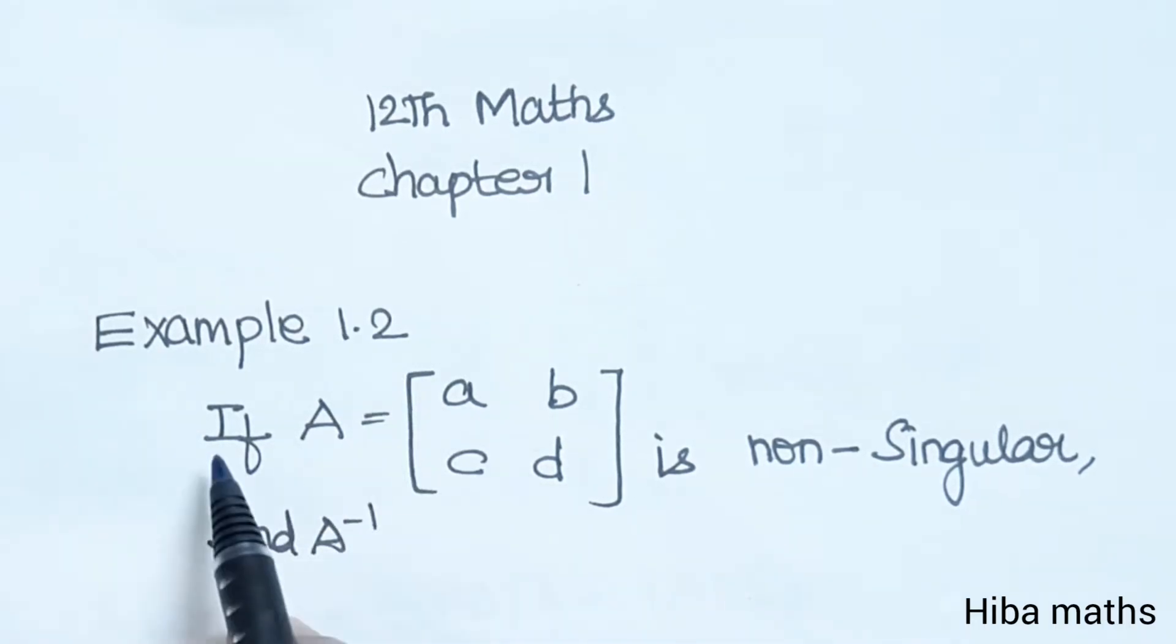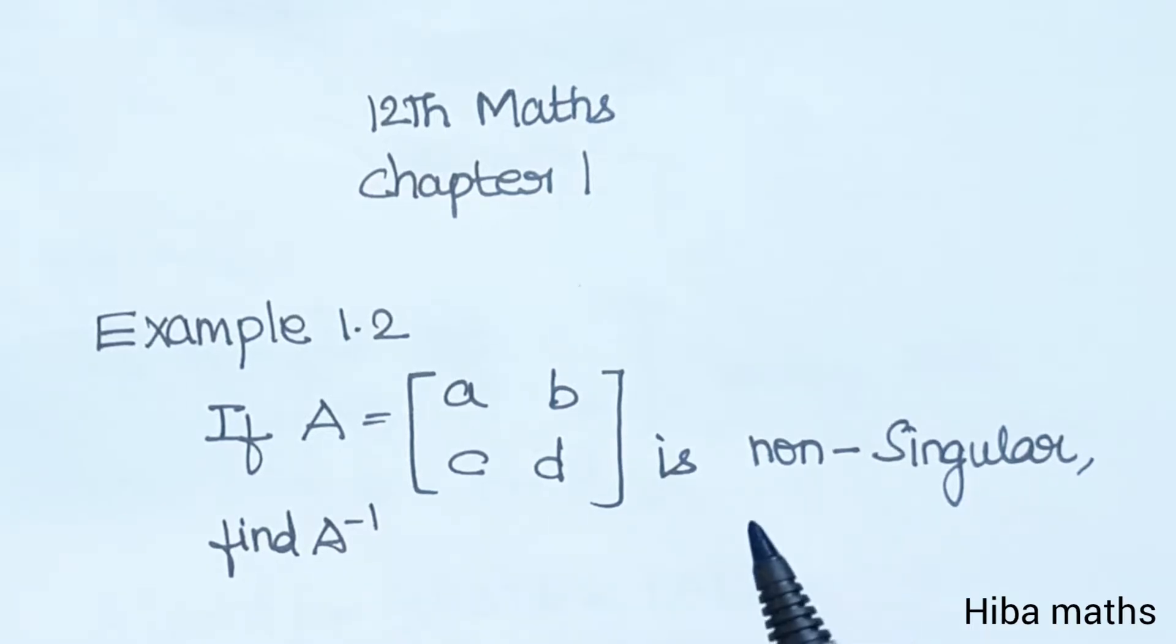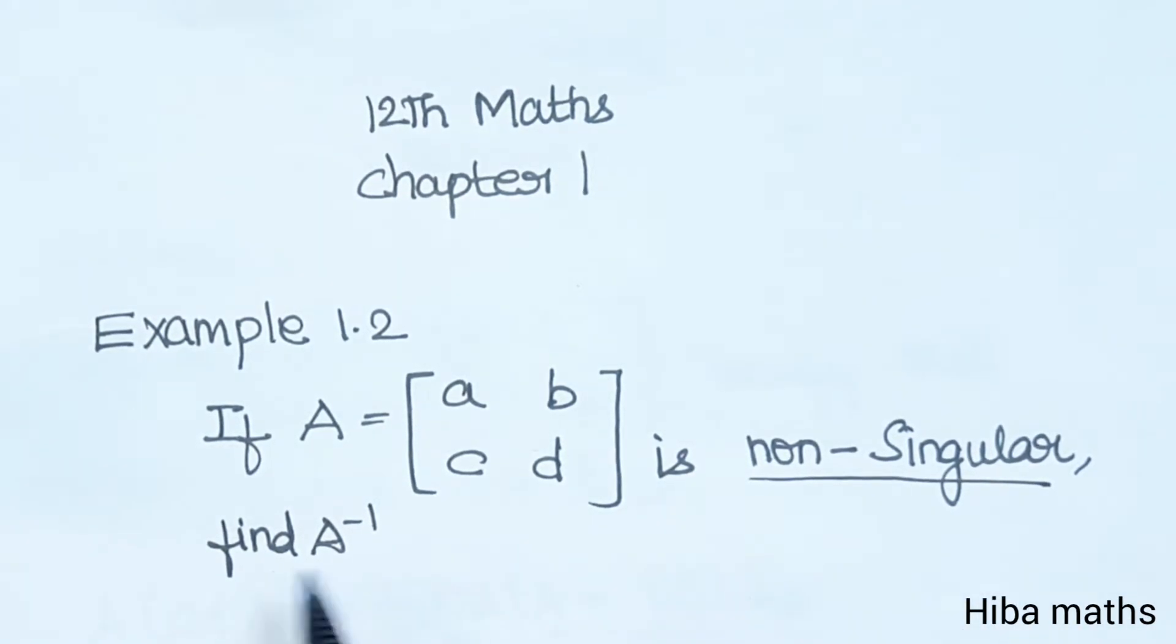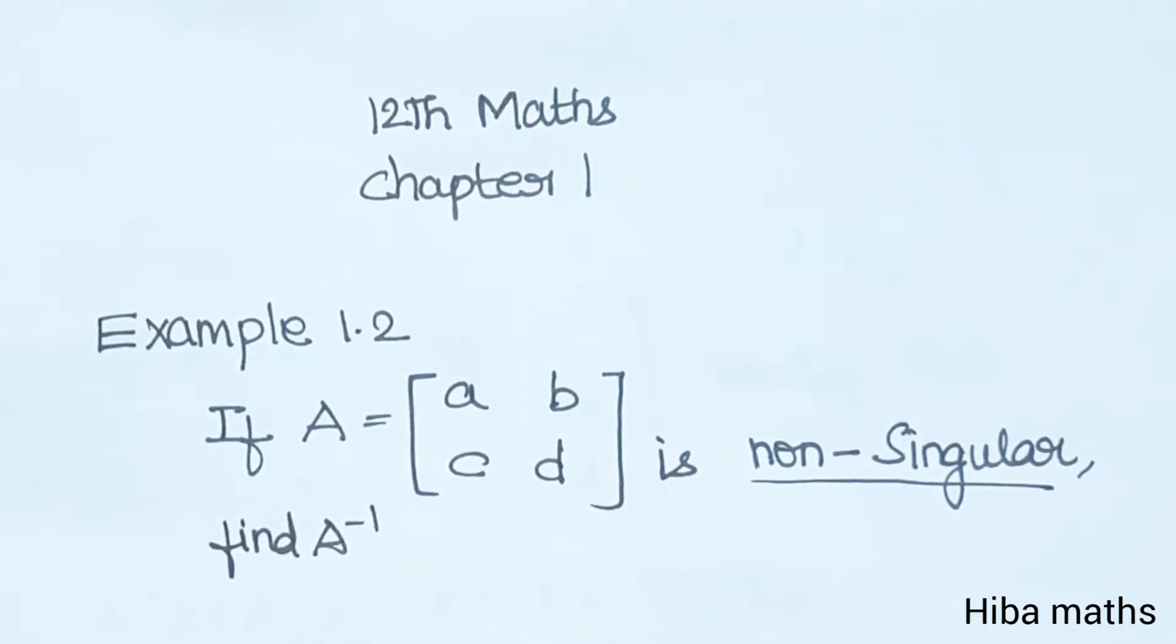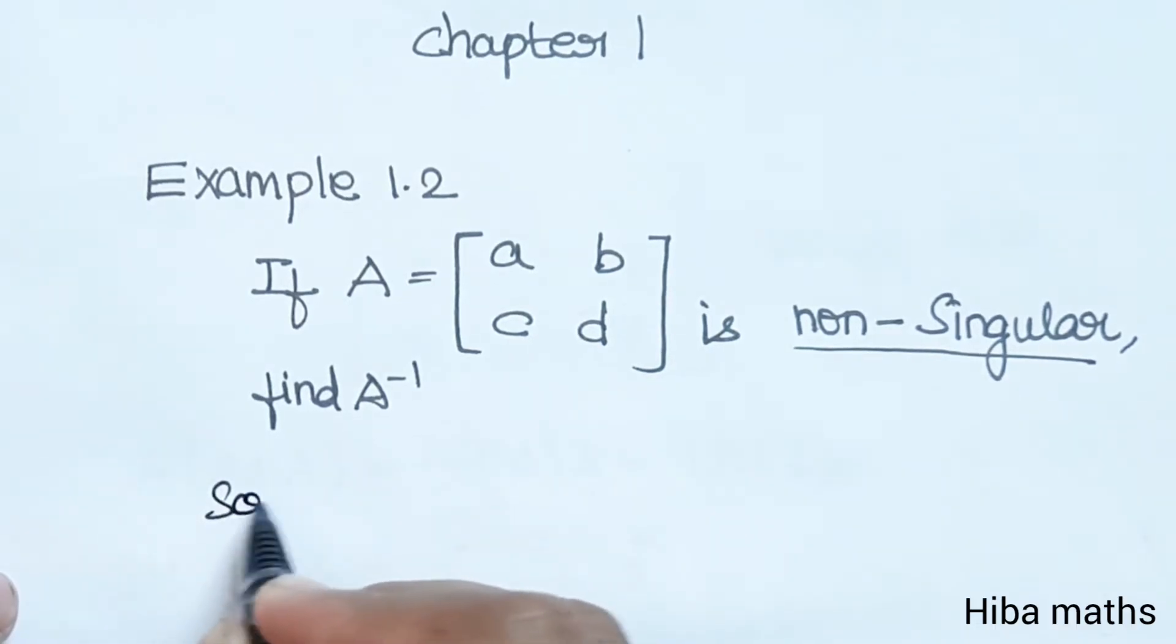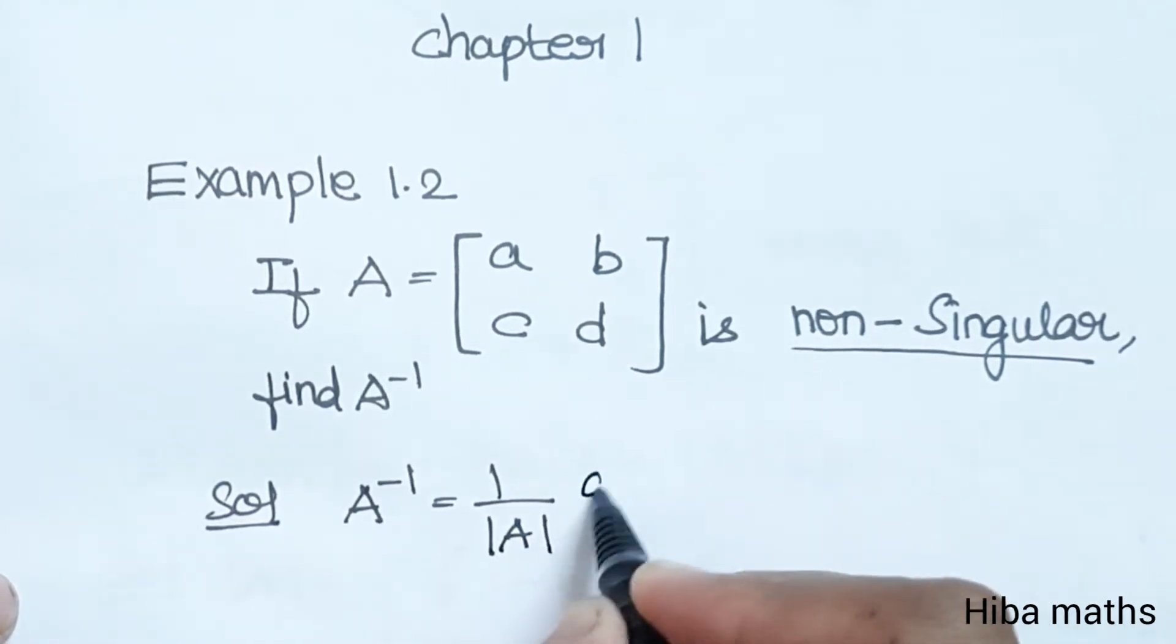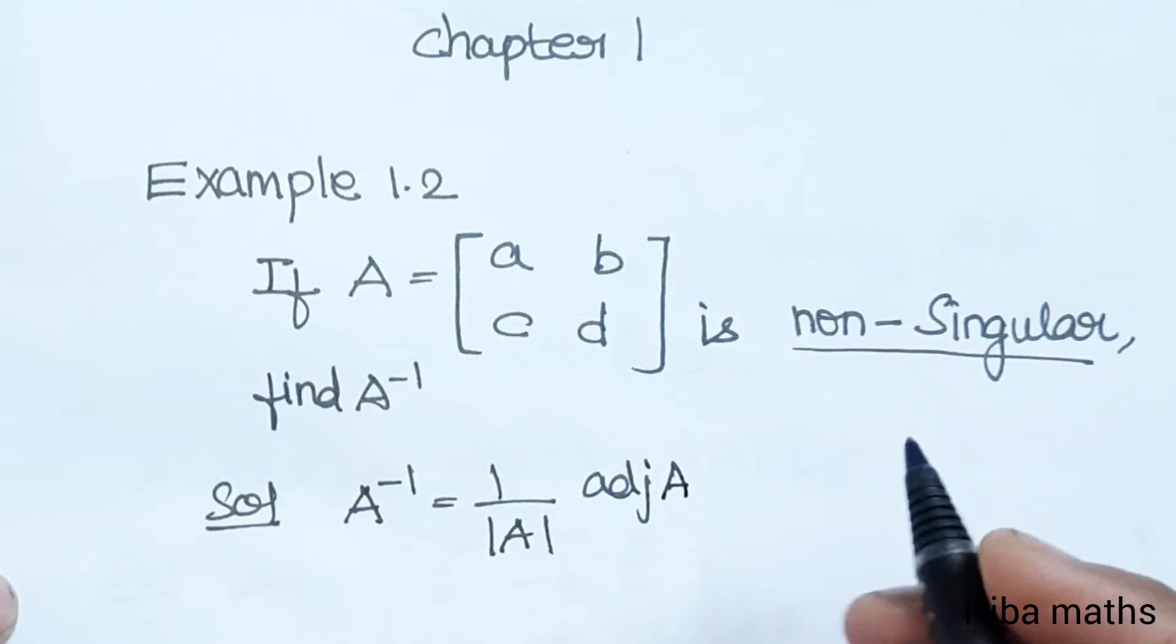Example 1.2: If A equals [[a, b], [c, d]] is non-singular, find A inverse. The formula is: A inverse equals 1 by modulus of A into adjoint of A.